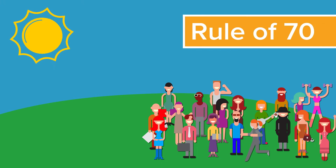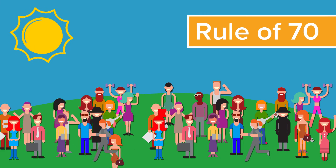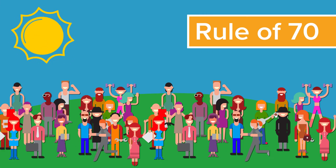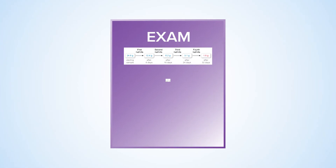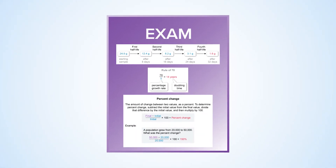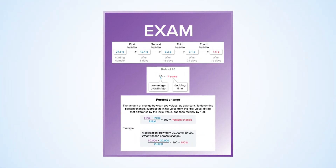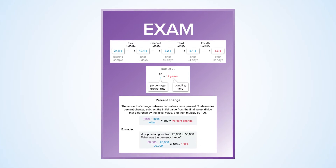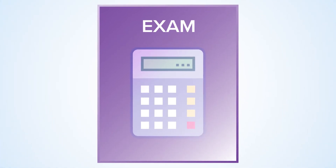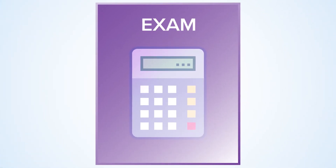The sixth is all about mathematical routines, where you'll learn about environmentally focused calculations so that you can better understand how environmental issues are predicted and determined. On the exam, you'll be asked to do those calculations — like half-life, rule of 70, and percent change — and you're even able to use a calculator for those.